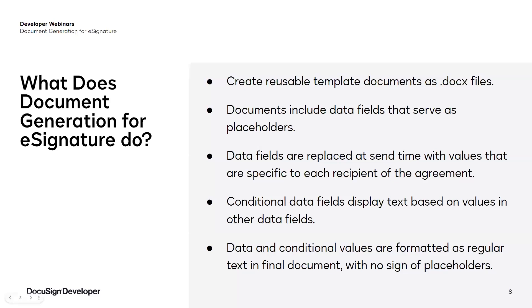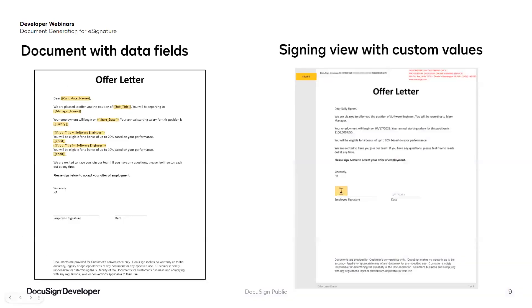In the final version of a document that a recipient sees, placeholders are seamlessly replaced with the correct information and the document looks like it was created just for that recipient. Here's what a template document looks like and what an actual customer document generated from that template looks like. The template document on the left has placeholder values and conditional logic highlighted. After this webinar, we'll share a list of links that include DocuSign support articles explaining the data field and conditional field syntax. On the right, the document as displayed to the recipient is cleanly formatted and has all the custom values populated.